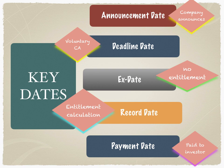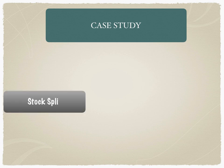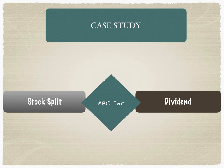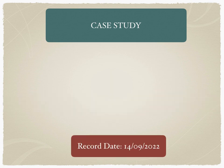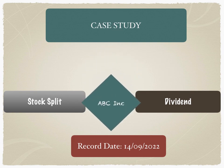Those are the five most important dates to remember in corporate actions. Now let's take a look at a case study of a company in India called ABC Inc., which has announced both a stock split and a dividend with the same record date — 14th September 2022. The question that arises: can a company announce both a stock split and a dividend with the same record date?